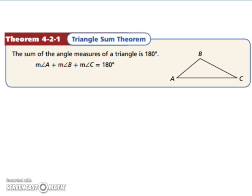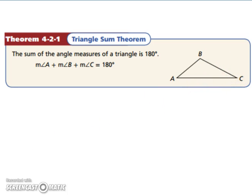Let's look at the triangle sum theorem. If you were to add up all the angles of your triangle, it will be 180 degrees. So the measure of angle A plus the measure of angle B plus the measure of angle C equals 180 degrees.